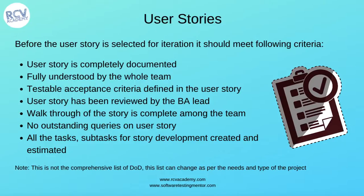There should be no outstanding queries on the user story. If there are any outstanding queries, they should be answered, waived off, or signed off by the BA lead. Then all the subtasks and tasks for the story development should be created and estimated before you can actually pick the user story for iteration.